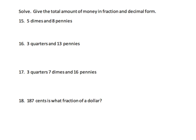Here students are allowed to choose how they organize their thinking. For example, with three quarters and 13 pennies, there are a variety of approaches. We could start with three quarters being 75 cents — using either the cent symbol or the word 'cents' — and then handle the 13 pennies separately.